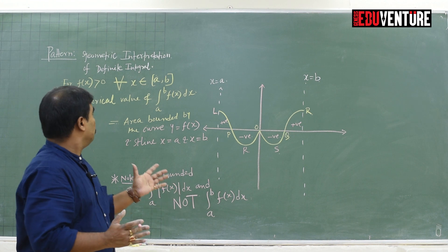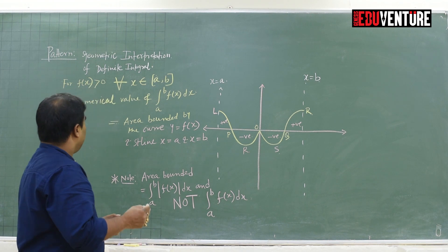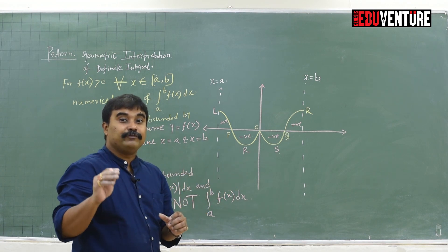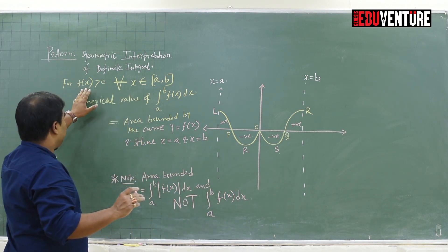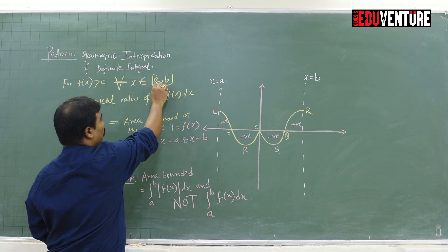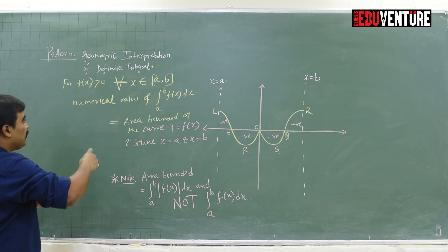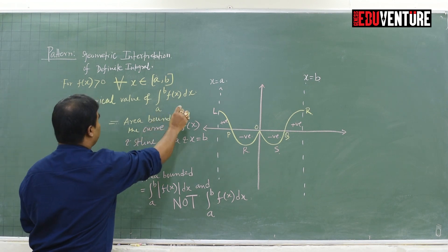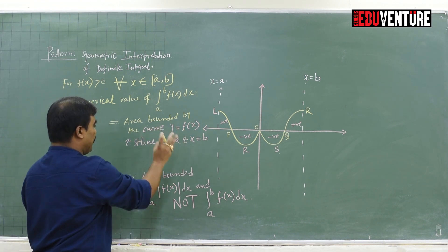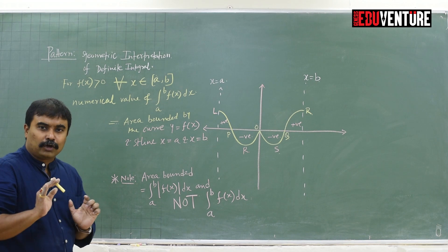First, we start with the geometric interpretation of definite integration. For any random curve that needs to be continuous, and if f(x) is greater than 0 for all x within the boundary value a to b — that is a closed interval — the numerical value of the integral from a to b of f(x) dx is nothing but the area bounded by the curve y = f(x) and the straight lines x = a and x = b. It's not at all complicated.